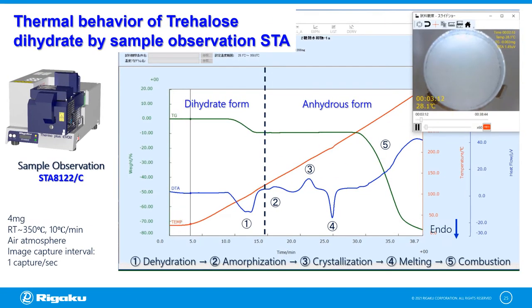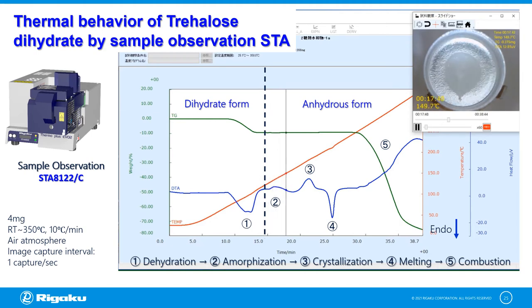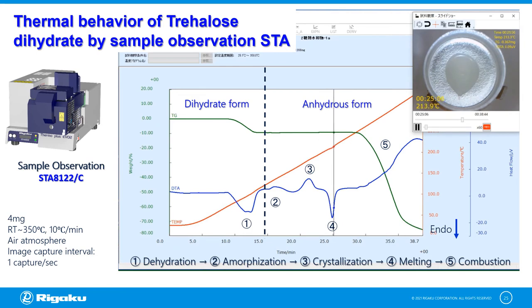Trehalose dihydrate plays an important role as an excipient and a stabilizer in the pharmaceutical industry. In this application, the sample observation STA method is used for the measurement of trehalose dihydrate. Here we can observe changes in volume, size, color, and shape as the sample goes through dehydration, amorphization, crystallization, melting, and at the same time, combustion.